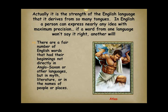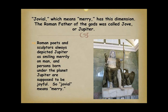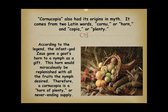There are a fair number of English words that have their beginnings not directly in Anglo-Saxon or other languages, but in myth, literature, or in the names of people or places. Jovial, which means merry, has this dimension. The Roman father of the gods was called Jove or Jupiter. Roman poets and sculptors always depicted Jupiter as smiling merrily on man, and persons born under the planet Jupiter are supposed to be joyful — so jovial means merry. Cornucopia also had its origins in myth. It comes from two Latin words: cornu, meaning horn, and copia, meaning plenty. According to the legend, the infant god Zeus gave a goat's horn to a nymph as a gift, and this horn would miraculously be replenished with all the fruits the nymph desired. Therefore, a cornucopia is a horn of plenty or never-ending supply.